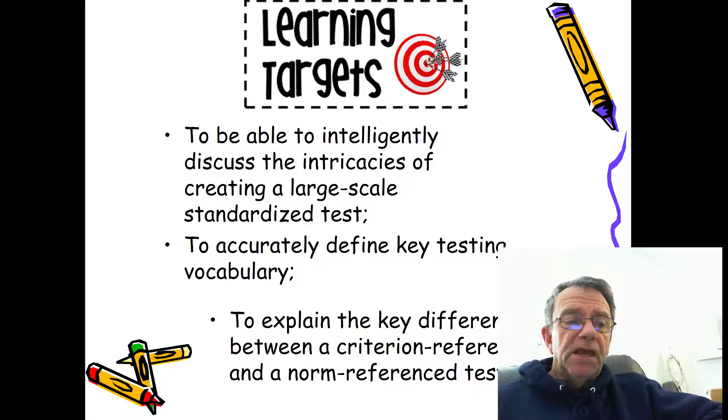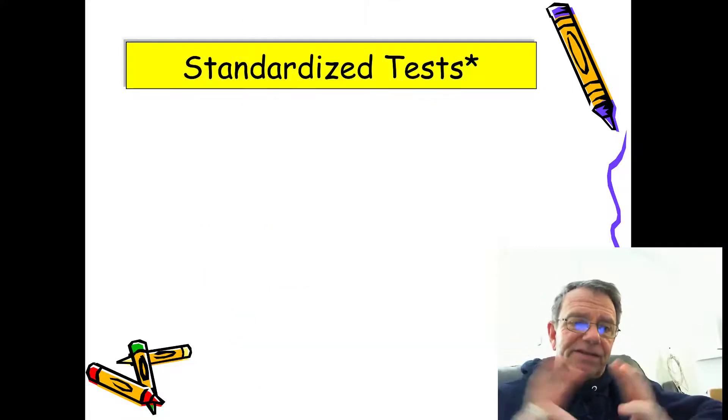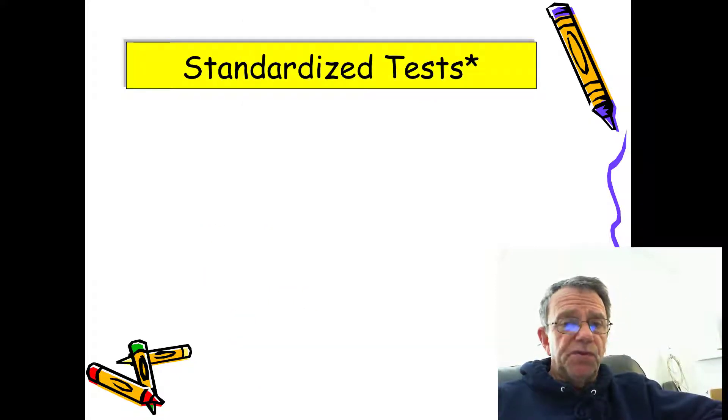One of the big ideas of this course is the difference between a norm-referenced and criterion-referenced test. If you walk away with anything from this course, you better walk away with knowing the difference and being able to distinguish those two.